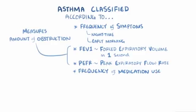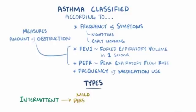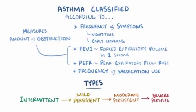From least to most severe, the types of asthma are intermittent asthma, mild persistent asthma, moderate persistent asthma, and finally severe persistent asthma.